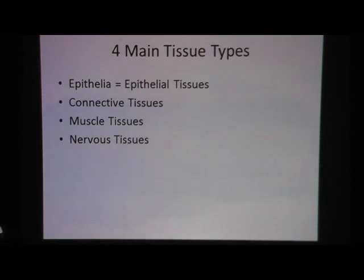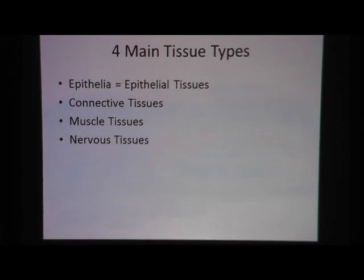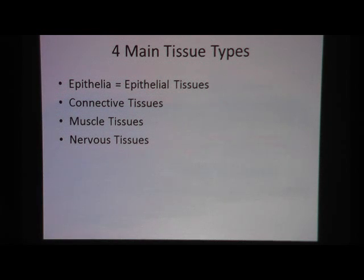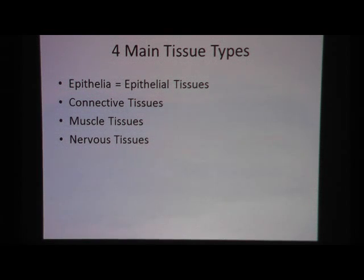Quick review: we have four main tissue types in the body. We have epithelial tissues, connective tissues, muscle tissues, and nervous tissues. Anywhere in the body you can find specimens of one of these four tissues, and that's it. There aren't any five, six, or ten tissues — just four main tissue types.